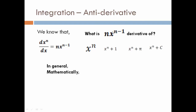So in general, mathematically, I can say that the anti-derivative of n times x raised to n minus 1 will be equal to x raised to n plus c. Or I can represent it as: ∫n·x^(n−1) dx = x^n + c.